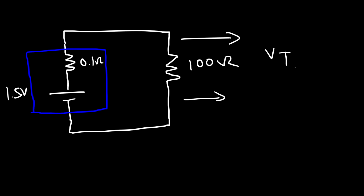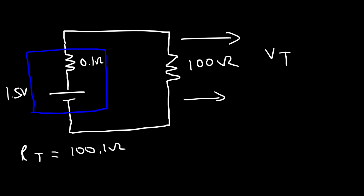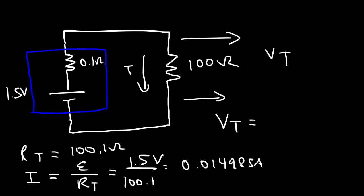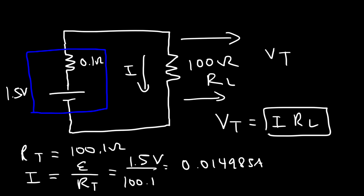First, calculate the current. The total resistance is 100 + 0.1 = 100.1 ohms. The current is EMF divided by total resistance: 1.5 ÷ 100.1 = 0.014985 amps. The terminal voltage is the current times the load resistance: 0.014985 × 100 = 1.4985 volts. So it's just slightly less than 1.5 — approximately 1.5 volts. Now let's see what happens when we decrease the load resistor from 100 ohms to 10 ohms.